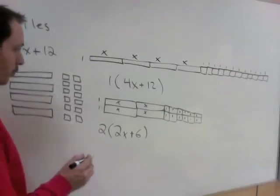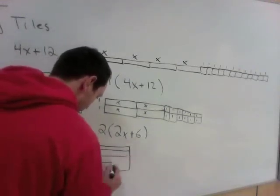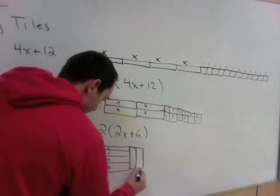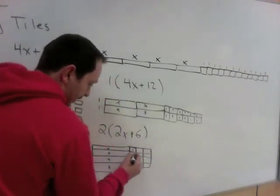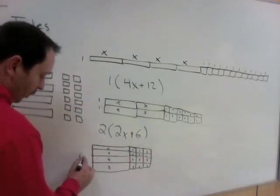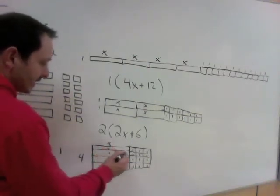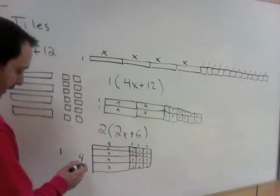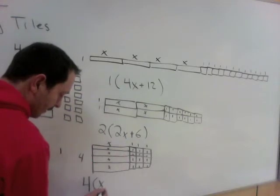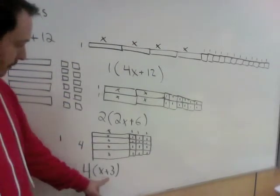Let's look at this one more way. I have 4 x's and 12 ones. This is another rectangle — I have 4 length-1's along one side, and a length x plus 3 ones along the top. So my answer here would be 4 times x plus 3, which is 4(x + 3). Checking: 4 times x is 4x, and 4 times 3 is 12. ✓